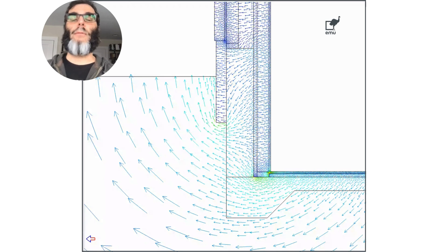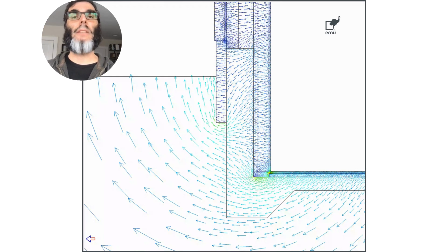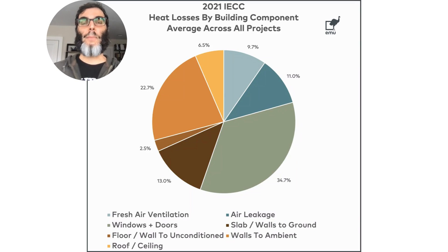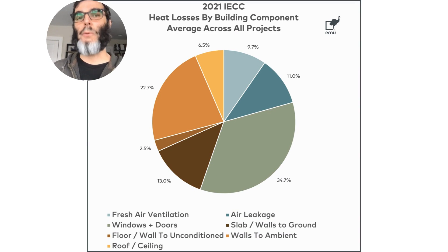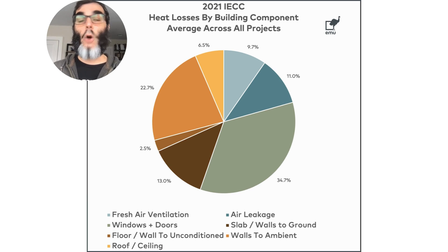Back to the flow direction view, you see that there's still heat escaping into the slab to the outside, but it is a lot less compared to the uninsulated slab condition. To summarize: heat losses through the ground to the outside air are the third cause of heat loss in a home, and they should not be overlooked in any project.